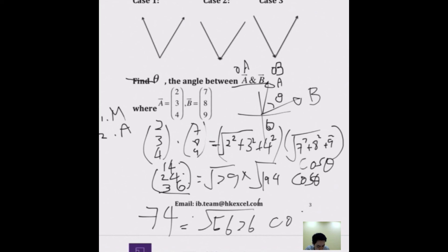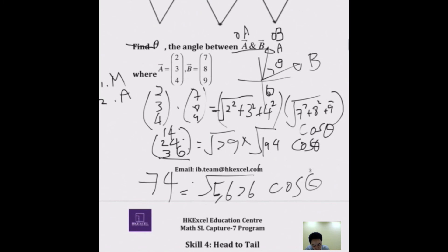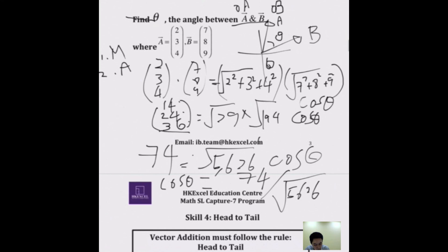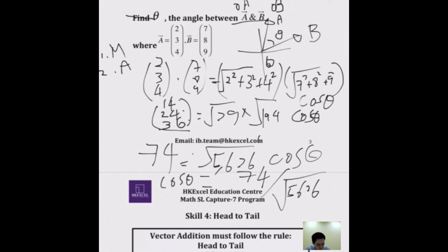Divide both sides: cos θ = 74 / √5626. Then take the inverse cosine. Putting it in your calculator gives θ ≈ 9.3976°, which rounds to 9.40° in 3 significant figures.